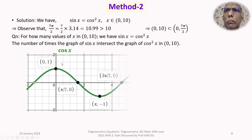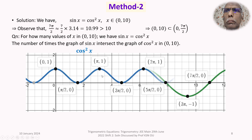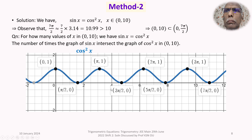We draw the graph of cos x from 0 to 10. When we square cos x, the negative values become positive values, so the entire curve lies above or on the x-axis. These negative portions are converted into positive values. This gives us the graph of cos²x, which remains above the x-axis throughout.